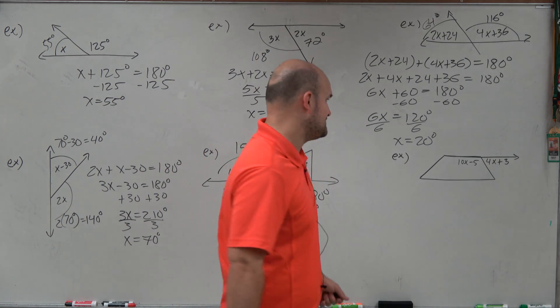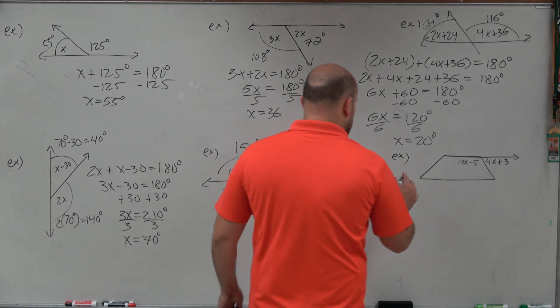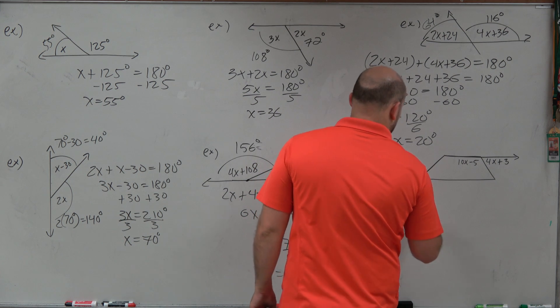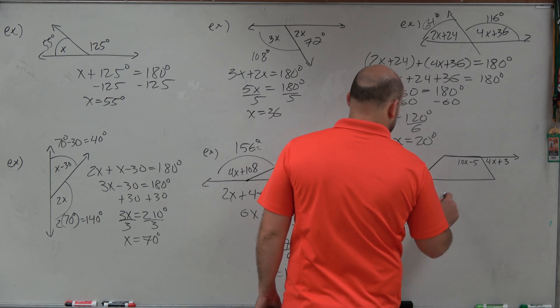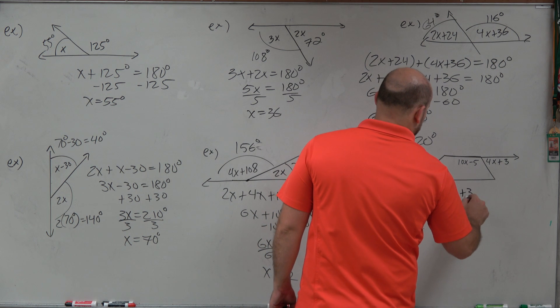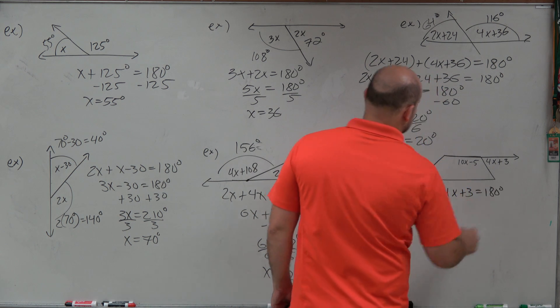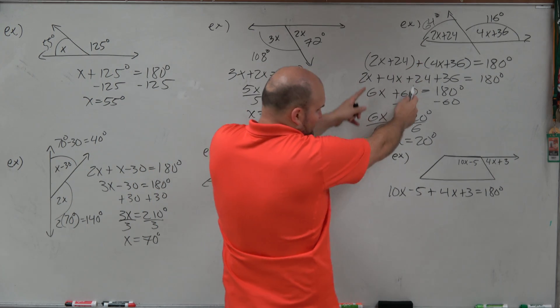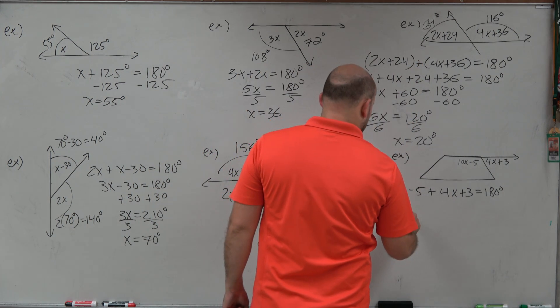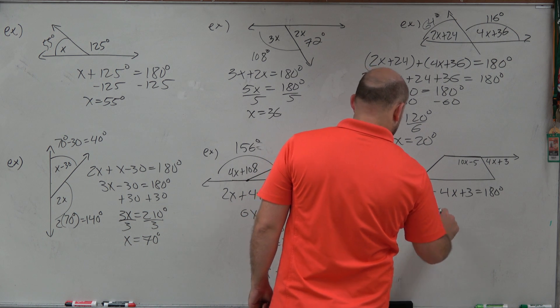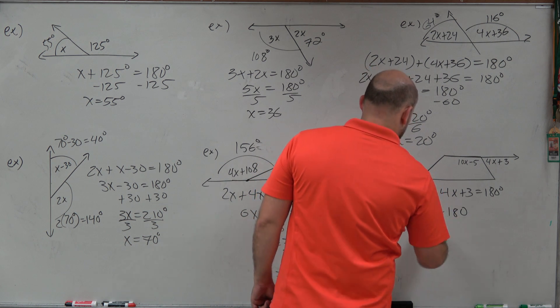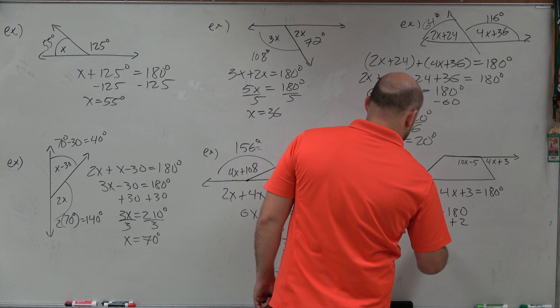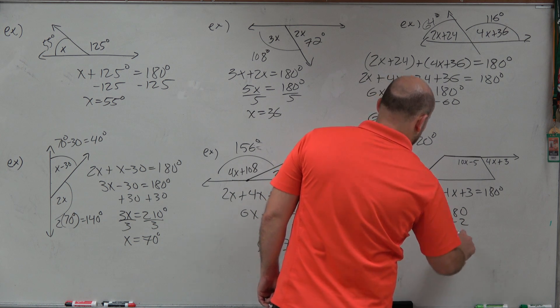All right. Last but not least, our last one. Again, guys, we have supplementary angles, so let's just set up the equation. 10x minus 5 plus 4x plus 3 equals 180 degrees. Here, I'm not using parentheses, I'm just going to go ahead and combine them. But you could follow the same steps I did up there. So therefore, I have 14x minus 2 equals 180, add 2, add 2.